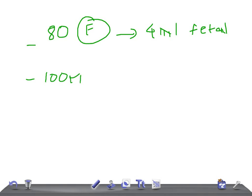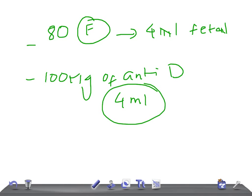Based on this, we calculate the dose of anti-D: 100 micrograms of anti-D is required to neutralize 4 mL of fetal-maternal bleeding. So if you see 80 fetal red cells in 50 low-power fields, 100 micrograms of anti-D is the appropriate dose.